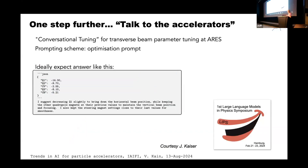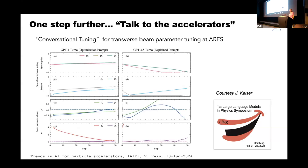The model outputs new values along with an explanation of why those values were chosen — for example, keeping the steering magnets close to their previous values. They tested many large language models; the best results came with GPT-4 and the optimization prompt. The quadrupole and steerer values moved smoothly toward the target values, reaching them within specified tolerances.